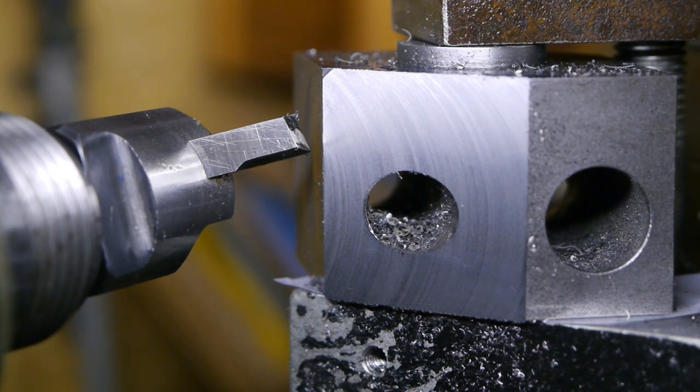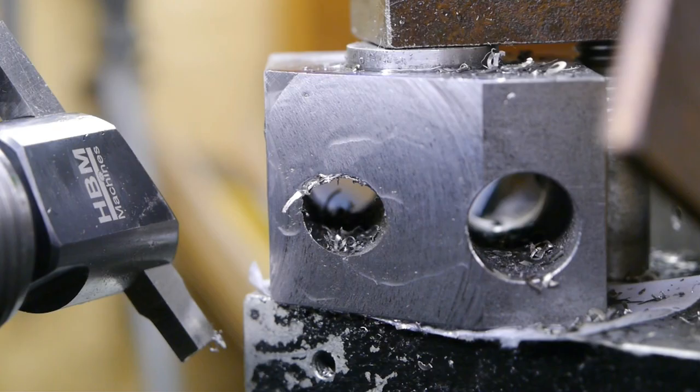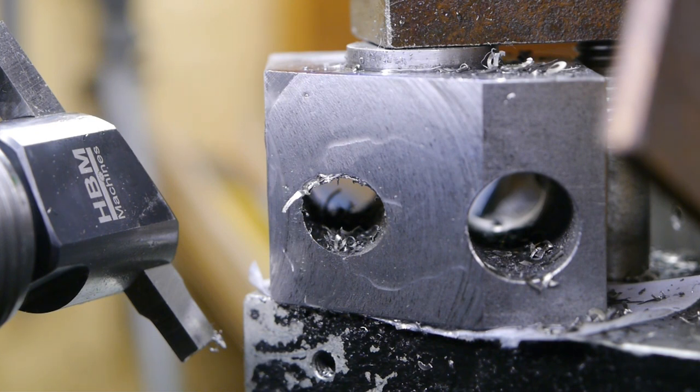That new set screw I put in gave me some problems. Whenever I tightened up the set screw, it would also bind up the spindle a little. I flattened the front of the set screw, or the point, whatever you want to call it. And that seems to help. This is going to be the last cut for this side.